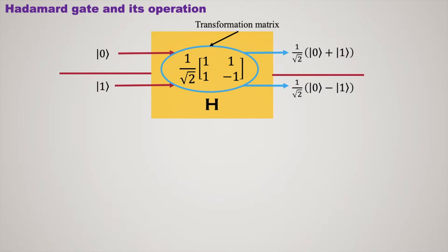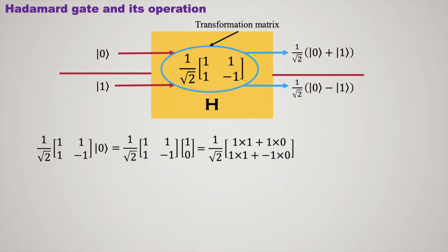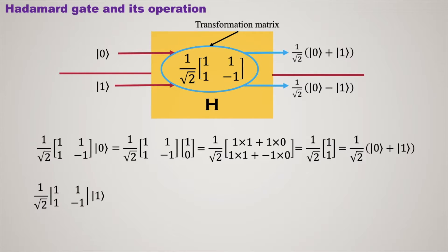Now see the mathematical operation. The transformation matrix of the Hadamard gate operates on ket 0, where ket 0 is the column matrix [1, 0]. When it operates with this matrix, it is simply the product of two matrices. The output is (1/√2) times the column matrix [1, 1], representing two states each with probability one-half — which is (1/√2)(ket 0 + ket 1). The same applies for ket 1.